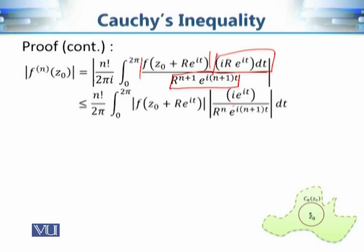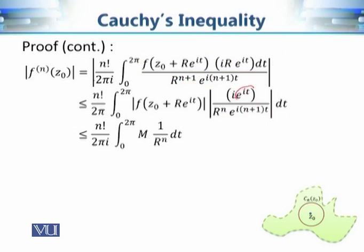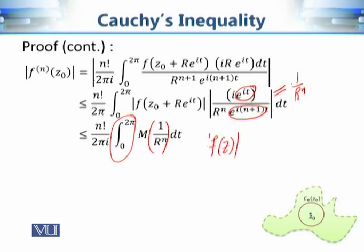The terms e^(iota(n+1)t) and e^(iota·t) combined with iota all have modulus equal to 1, by the definition of e^(iota·t). So this simplifies to 1 over r^n. Since f(z) is less than or equal to M on the circle, the whole integral is less than or equal to M · (1/r^n) dt. Therefore the bound becomes n! over 2π times M over r^n.